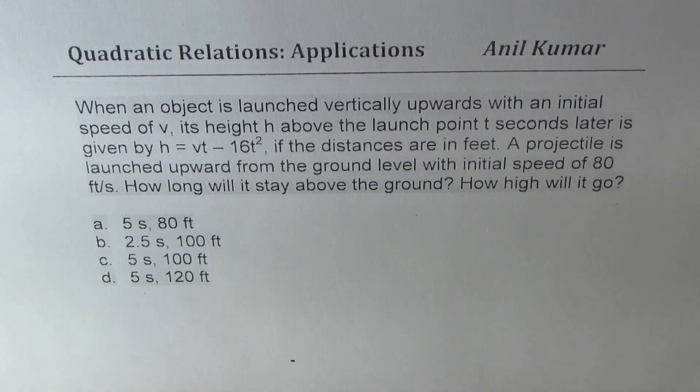When an object is launched vertically upwards with an initial speed of v, its height h above the launch point t seconds later is given by h = vt - 16t² if the distances are in feet.